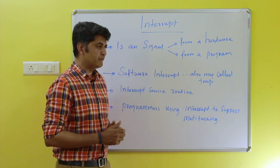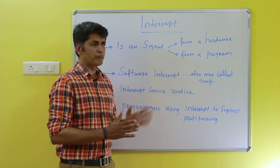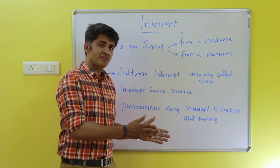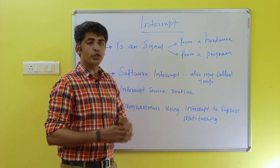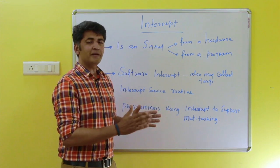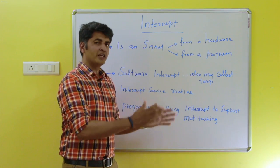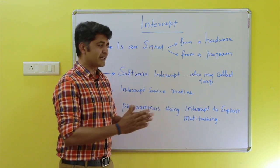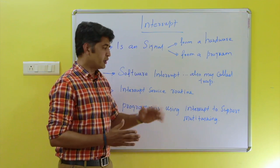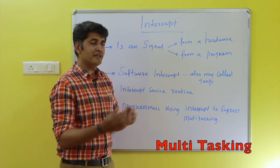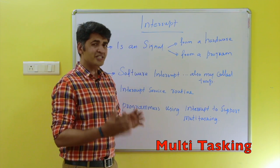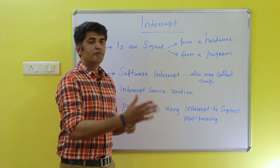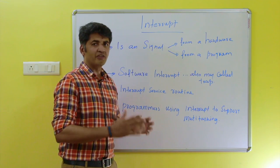One more advantage: nowadays programmers are using interrupts for multitasking. If the operating system is in a uniprocessor system, it can handle only one process at a time. If you want to change that characteristic, you can give an interrupt — the programmer can use the interrupt to switch control from one program to another program, giving the facility of multitasking.